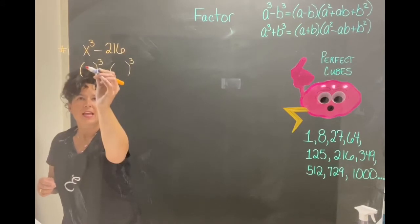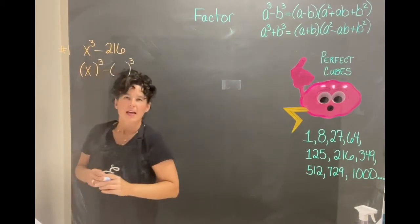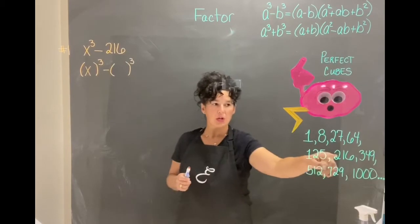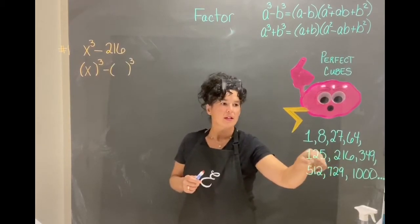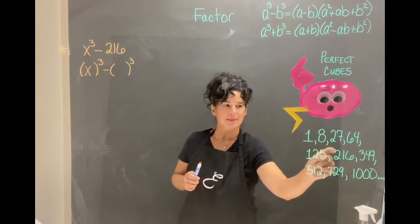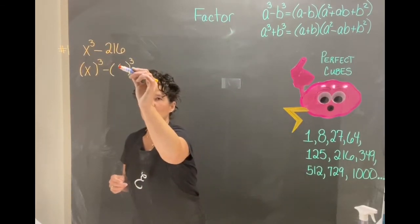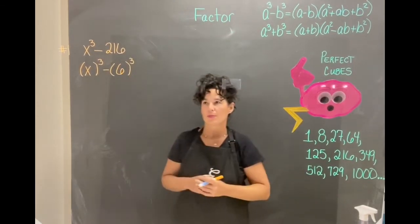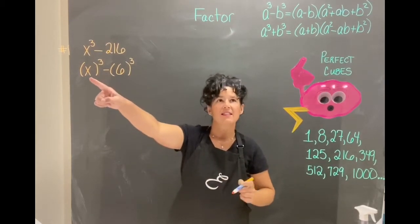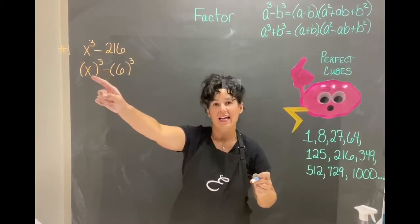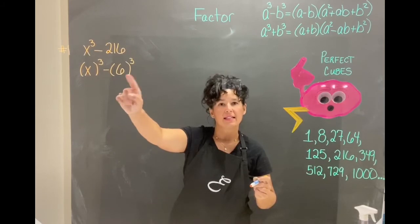Here the x is being cubed and then for 216 notice it's one of our perfect cubes and it's 6 times 6 times 6 is 216. So this is going to be 6 cubed. We've emphasized that the a is x and the b is 6.